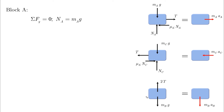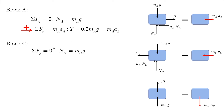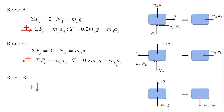For block A, summing forces in the y-direction gives the normal force, then in the horizontal direction: T − 0.2 × MA·g = MA × AA. For block C, NC = MC·g, then T minus the kinetic friction equals MC × AC. For block B, with positive down, the single equation is: MB·g − 2T = MB × AB.